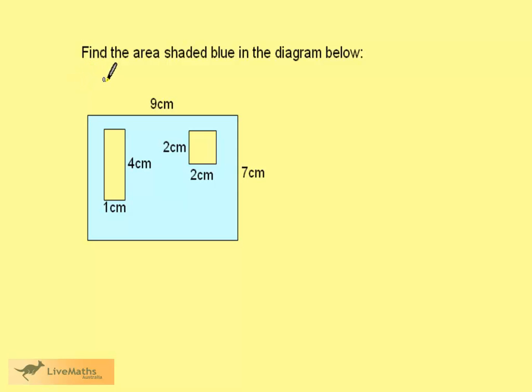We want to find the area that is shaded blue in the diagram below. We can see the diagram here. We have a large blue rectangle with two holes removed. One hole is a square and the other a rectangle.